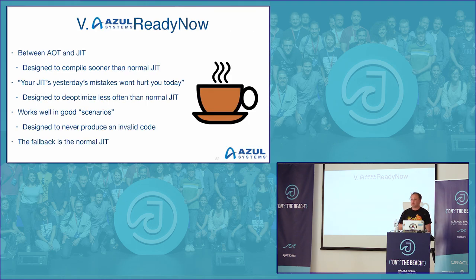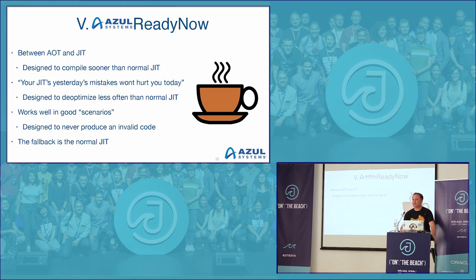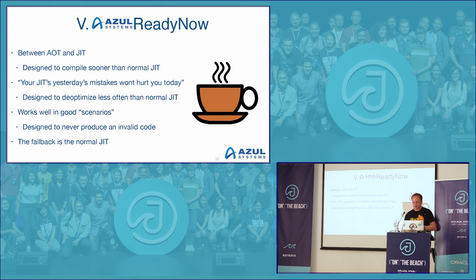Now we get to the stuff I've been working on for the last three years: ReadyNow. It's part of our VM and it sits between ahead-of-time and just-in-time compilation — compilation happens when you start the VM, not when the method becomes hot. So when a method becomes hot, the compilation is already available. The mistakes of heroic optimizations normally repeat over and over each day, but because we persist the profile, we can eliminate those. It works well if you're running more or less the same workload with the same data day to day, and if the profile didn't work out, there's a fallback to normal JIT — so it's a pure enhancement.